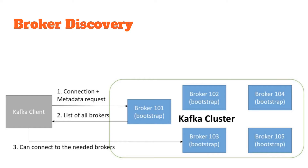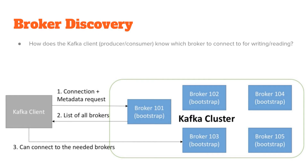A very common question asked about Kafka is: how does a Kafka client — that is, a producer or a consumer — know which broker it needs to connect to for reading or writing messages or events?